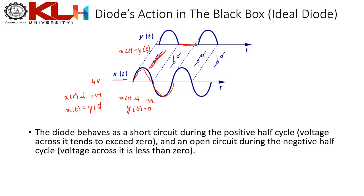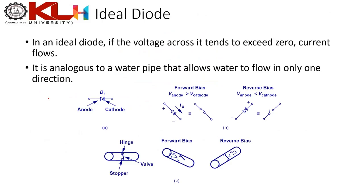This matches the behavior of a p-n junction diode: the anode is p-type and cathode is n-type. Current flows only in forward bias, when p is at greater potential than n. No current flow is modeled as an open circuit. Let's now model the ideal diode.